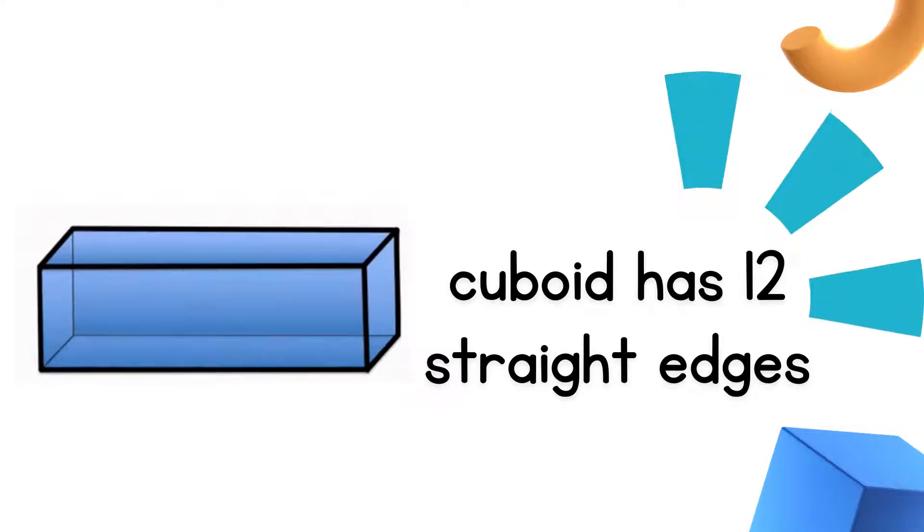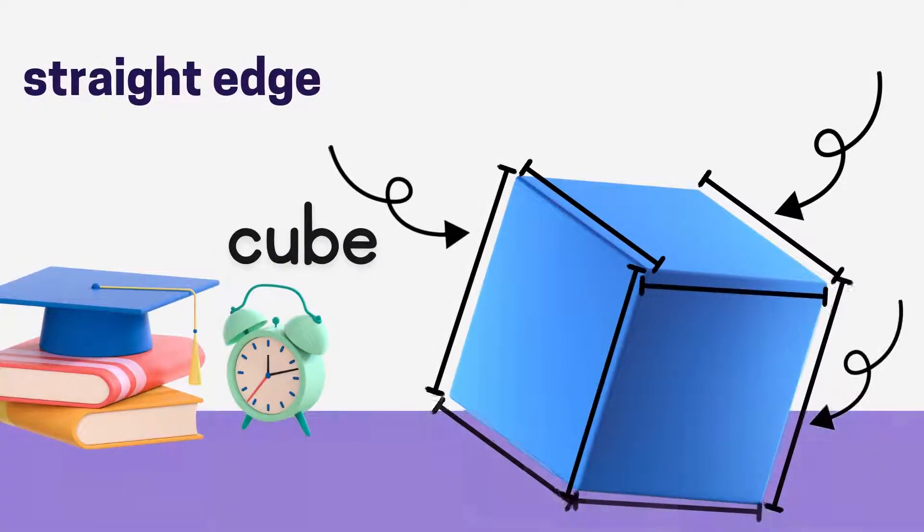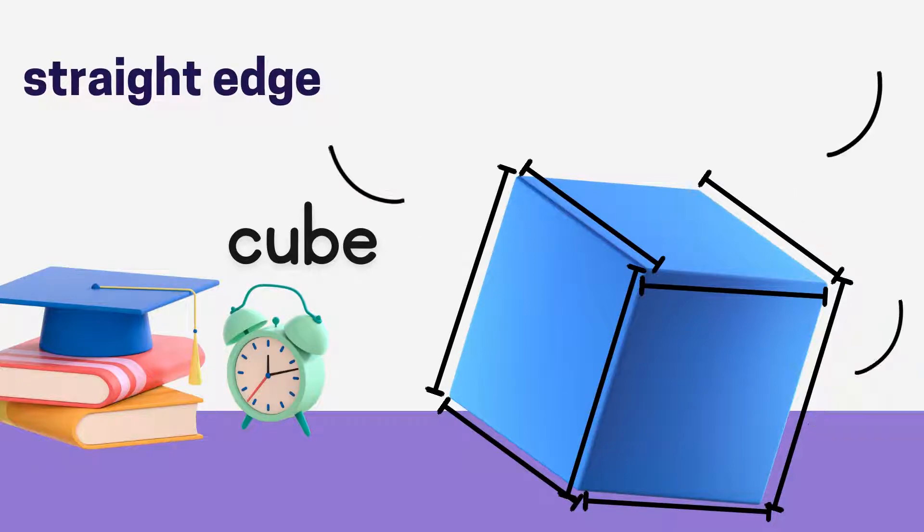Next is straight edges for cube. Look carefully. Straight edge. A cube has 12 straight edges with the same length.